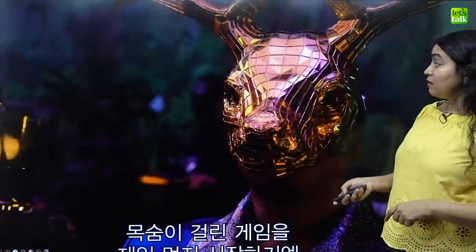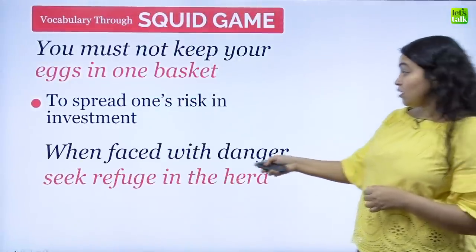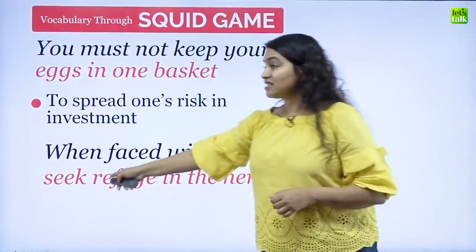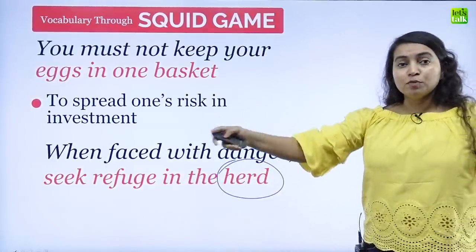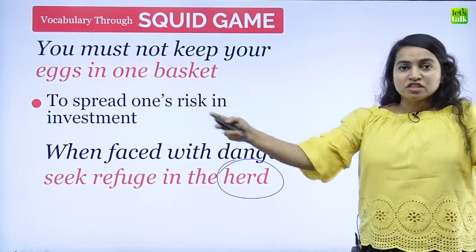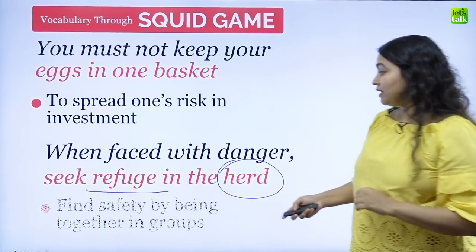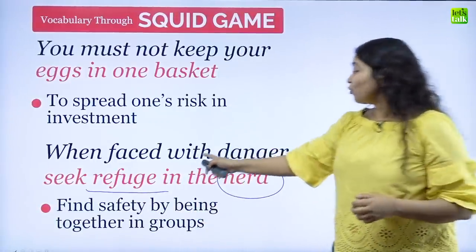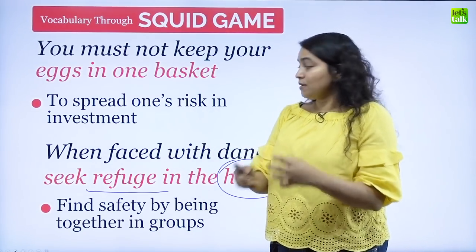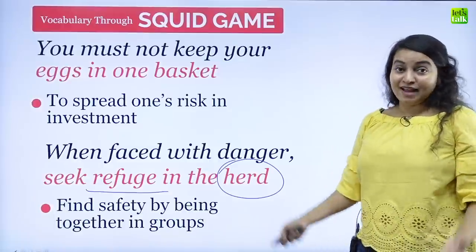Another idiom is used by one of the VIP characters who says: 'When faced with danger, a person seeks refuge in the herd.' A herd is a group of cattle — many cows and buffaloes together — and they seek security together. In other words, you will find safety by being together in groups. A lot of times, when people are in danger, they will work together because they seek refuge in the herd. It basically means you will find safety by working together in a group.